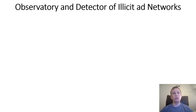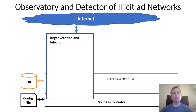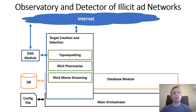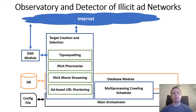To study traffic distribution systems and address these issues, we designed Odin — the Observatory and Detector of Illicit Networks. Odin collects URLs from four different traffic sources known to redirect users to illicit, abusive, or malicious landing pages. Typosquatting domain names monetize typing mistakes; illicit pharmacies profit from users searching for cheap drugs; illicit movie streaming sites attract traffic by streaming movies for free; and ad-based URL shortening services expose users to TDSs. Odin visits each URL using a multiprocessing crawler based on headless Chrome, schedules URLs owned by the same entity far apart in time, limits pages visited per day, and uses different IP addresses for different crawl profiles — all to mitigate IP-based cloaking and blocking.